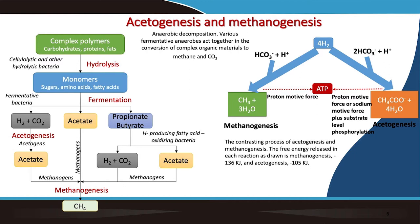Fermentative bacteria convert monomeric forms to three key intermediates: hydrogen plus CO₂, acetate (C2), propionate (C3), and butyrate (C4) plus higher volatile fatty acids. Acetogenic bacteria convert H₂ and CO₂ to acetate. This acetate is then taken up by methanogenic bacteria and converted to methane.